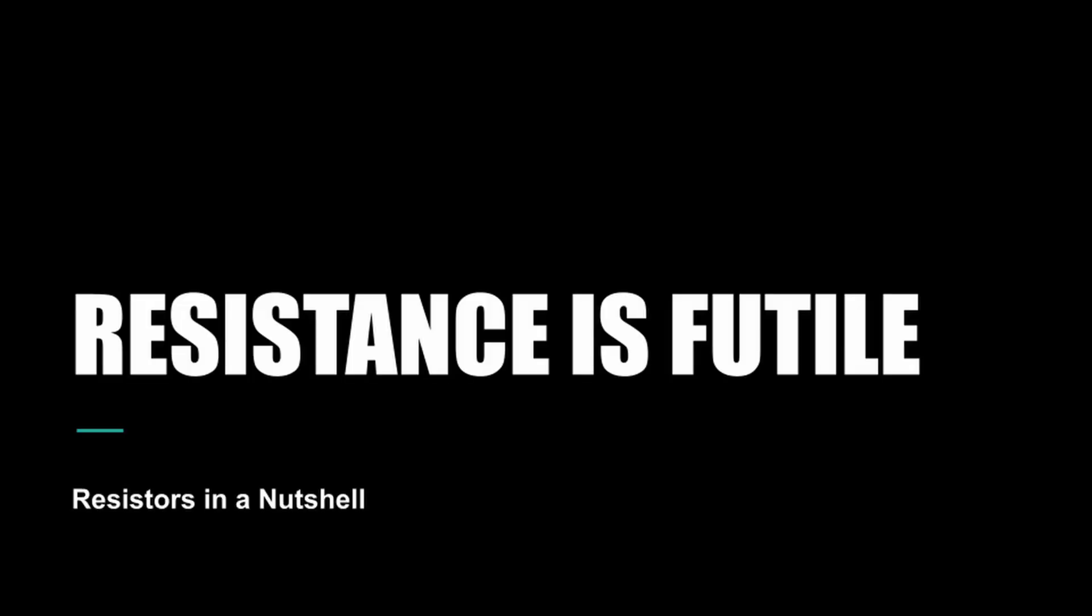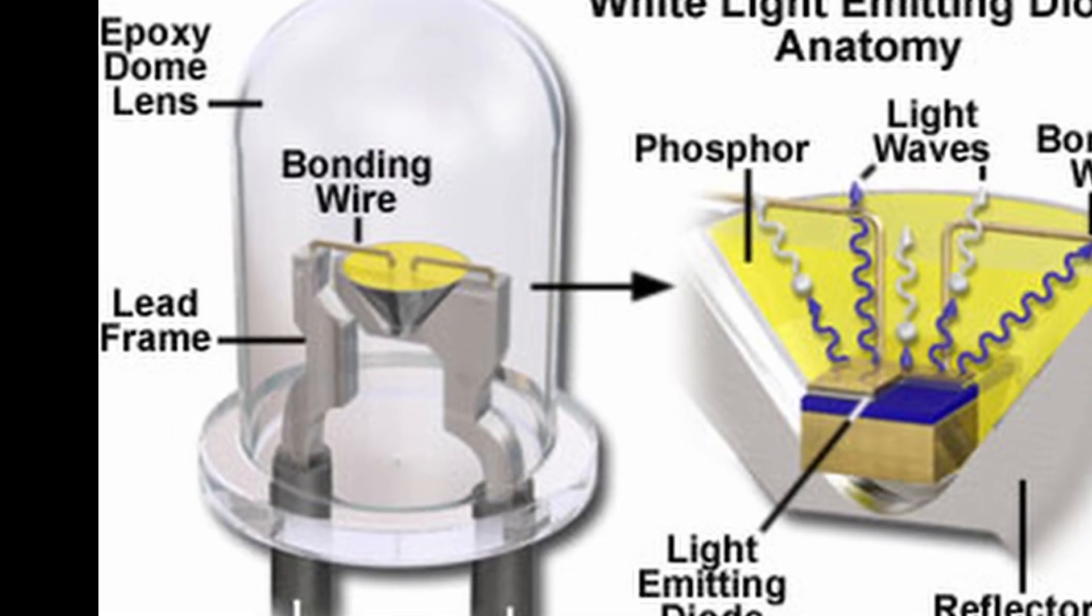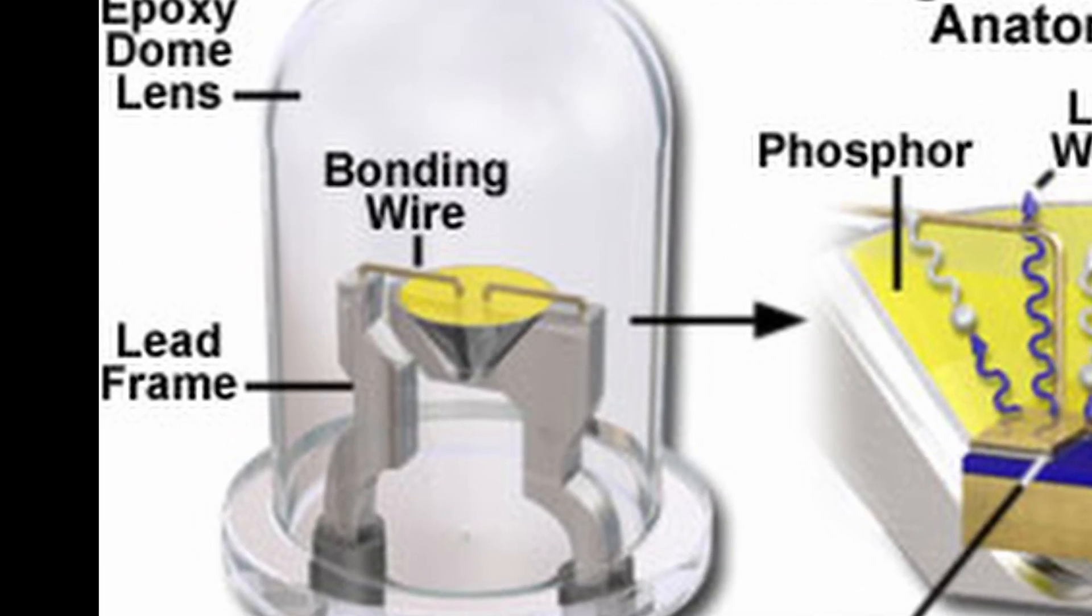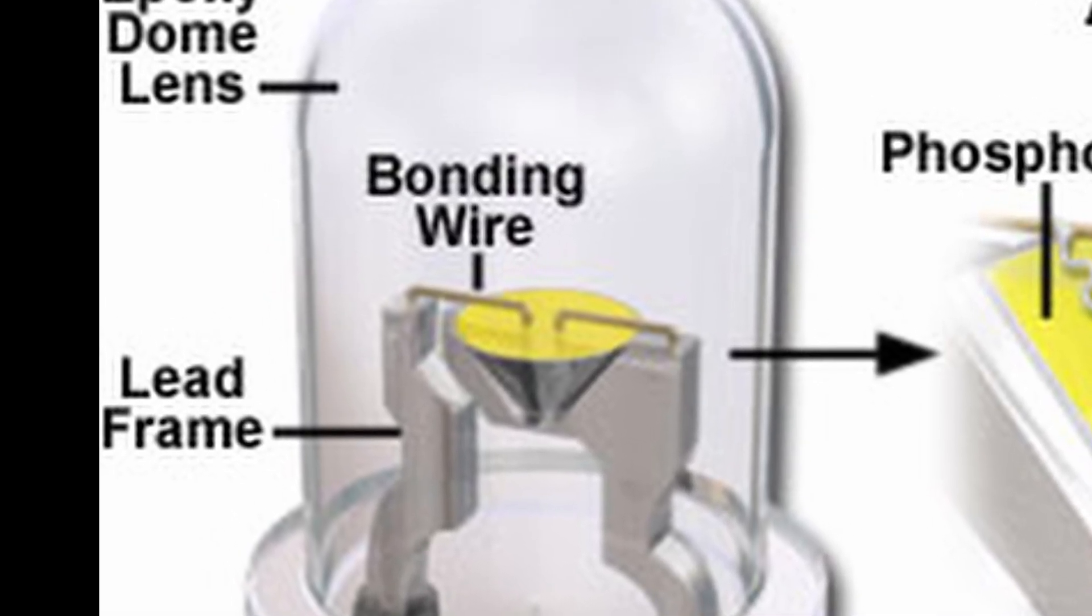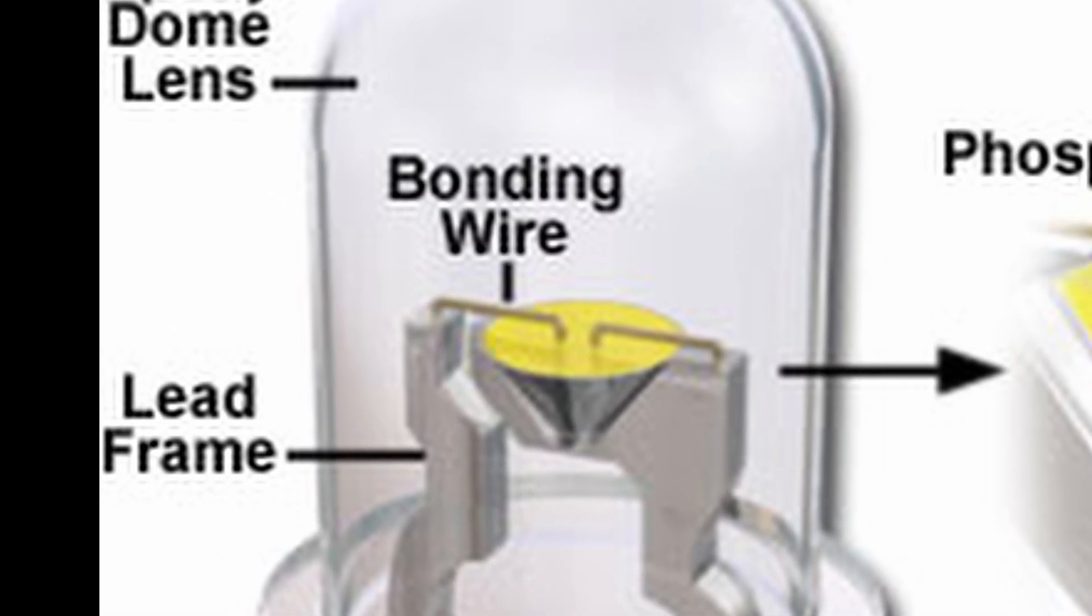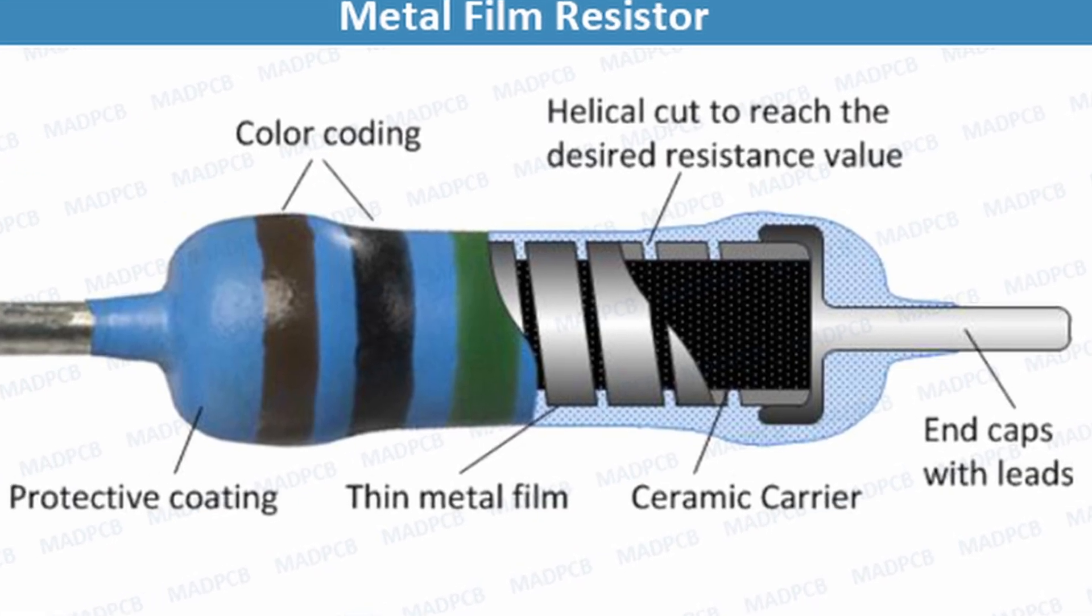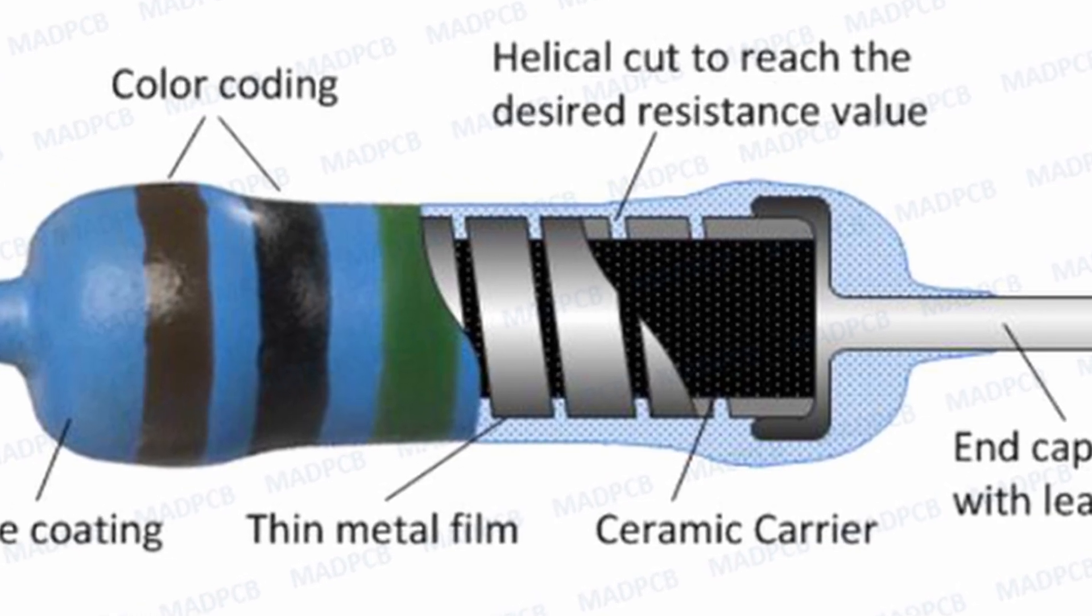Why LEDs need resistors? LEDs are very picky about voltage and current. Give them too much, even briefly, and they burn out. Too little and they won't light at all. Most standard LEDs operate in a narrow range, around 2 to 3 volts and 20 milliamps of current. A resistor keeps the LED in the safe zone, protecting it and making your lighting reliable.